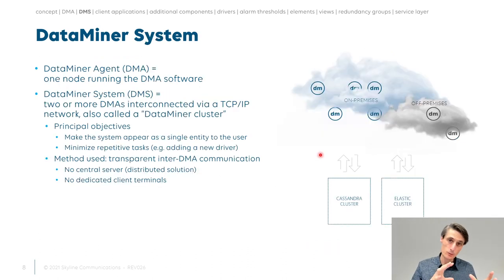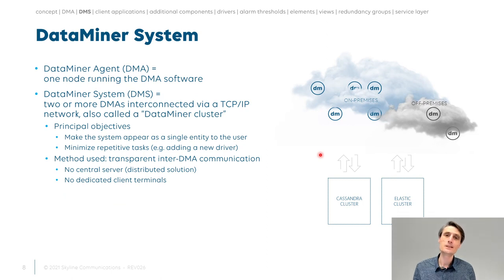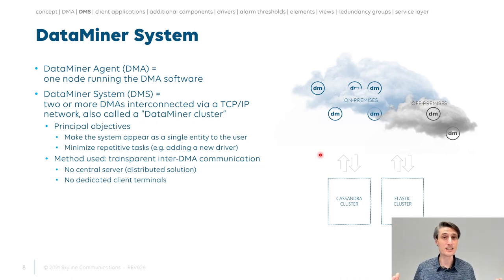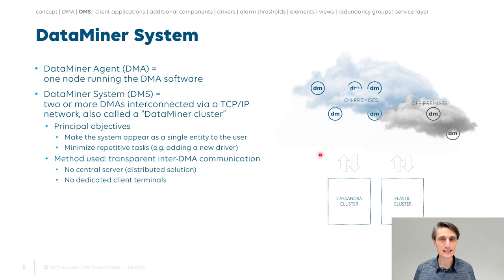One limitation of a DataMiner node is compute resources — limited CPU, memory, threads, and disk. When you have a bigger system, you'll need to expand. With DataMiner, you can simply add more DataMiner agents or nodes and your system grows — fully transparently to the user. As a user, you don't know if you're connecting to a system with one agent or five or twenty. You just connect through one of the DataMiner agents.